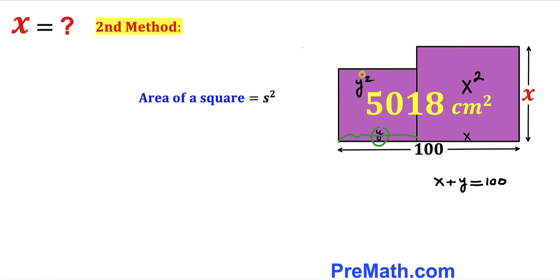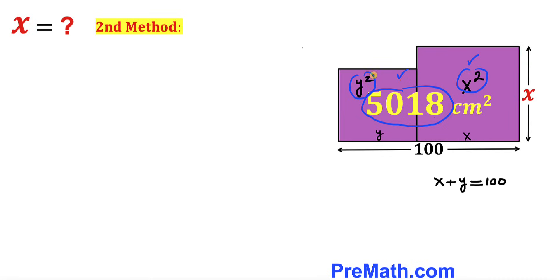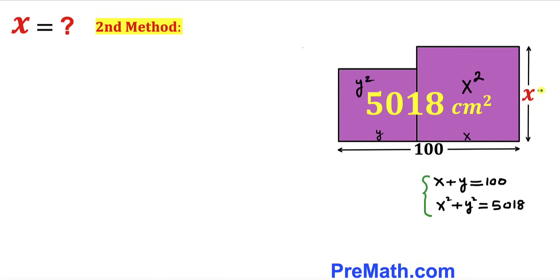Using the area formula, the area of the larger square is x squared and the area of the smaller square is y squared. The combined area for both squares is 5018 centimeters squared, which is also represented by x squared plus y squared. So I can write x squared plus y squared equals 5018. Our task is to solve this system of equations to find the value of x.